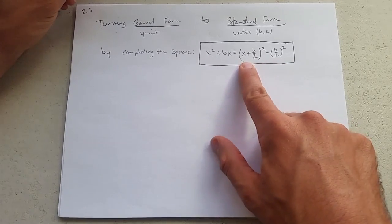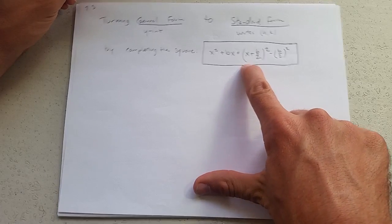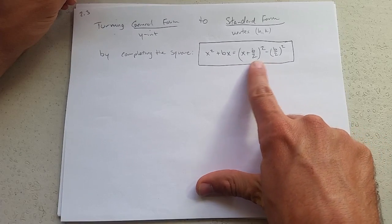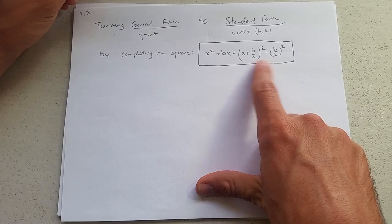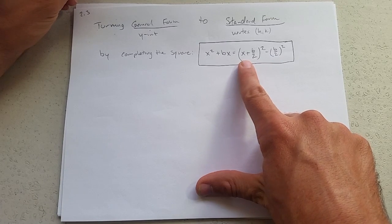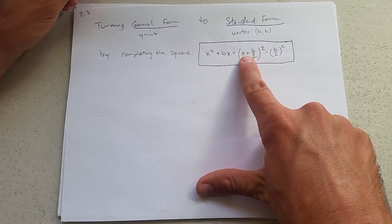All you need to do is foil this out right here. Carefully foil this out. You're going to get x plus b over 2x plus b over 2x, which is bx.